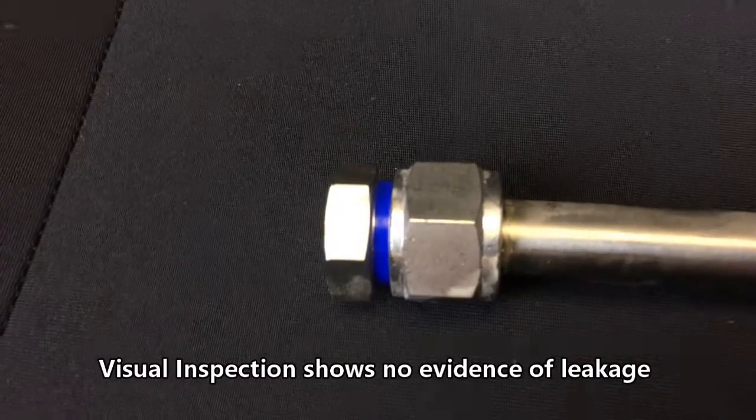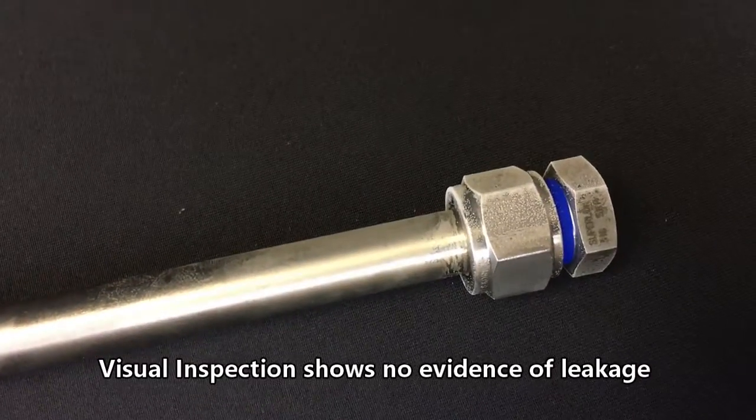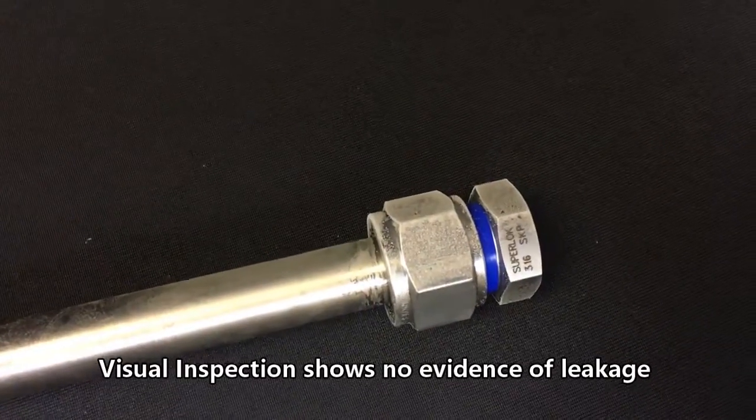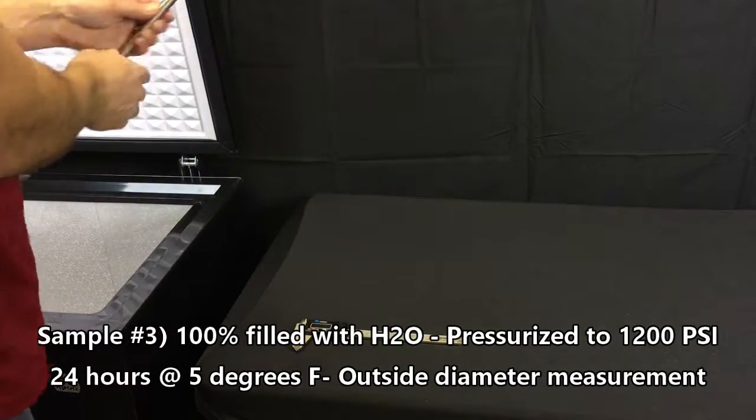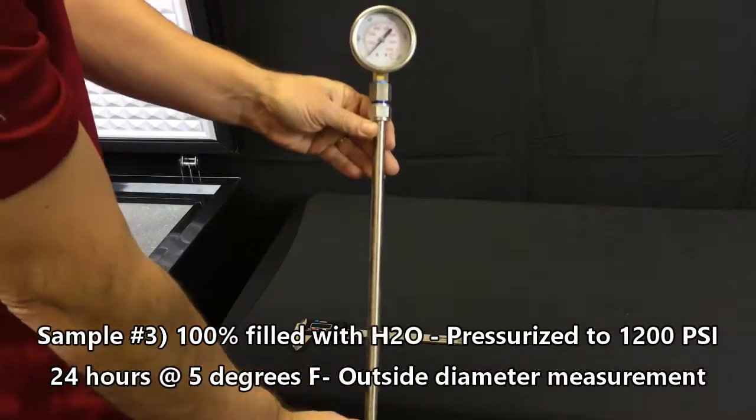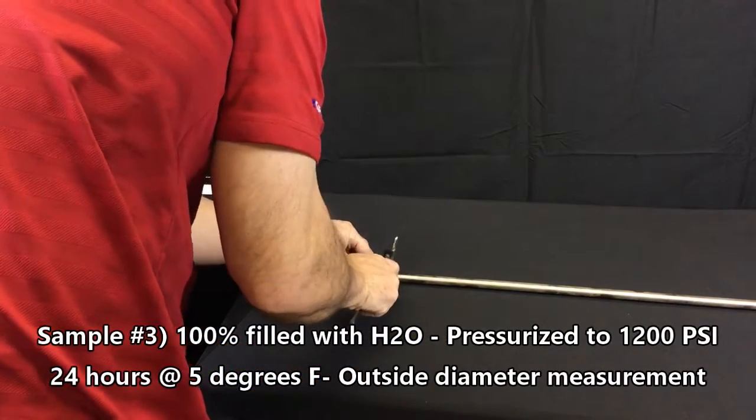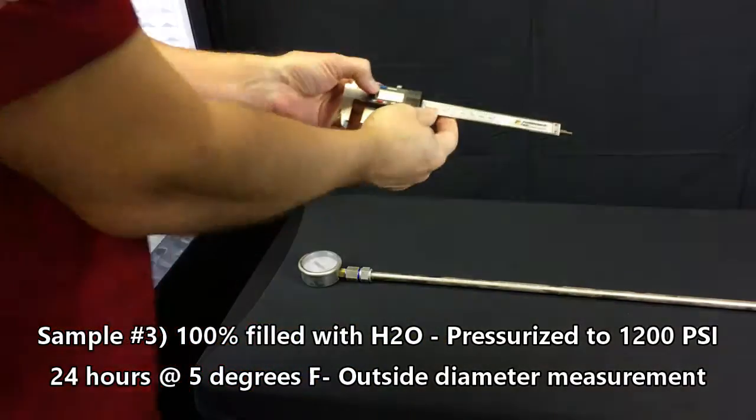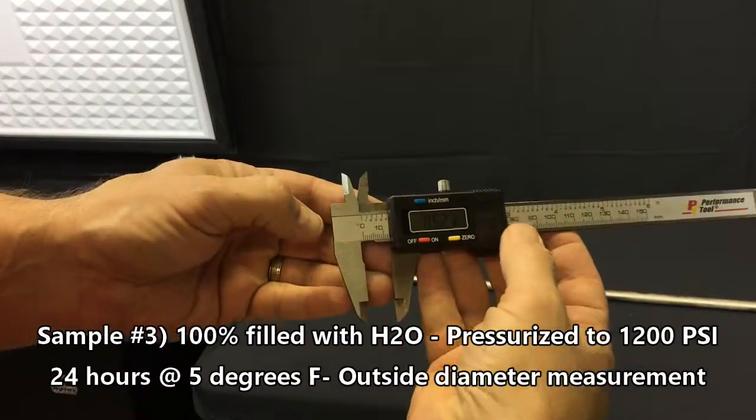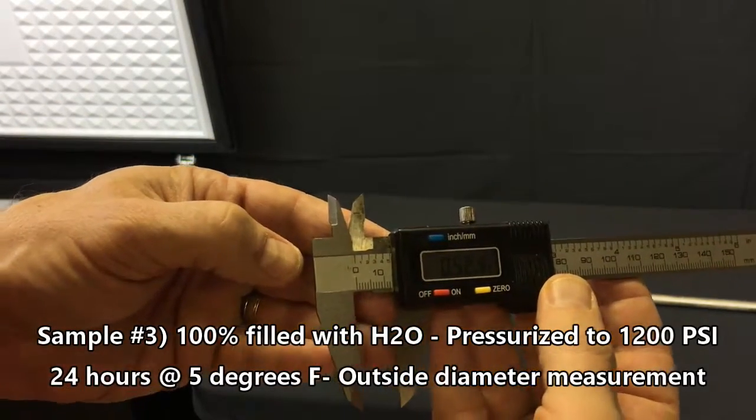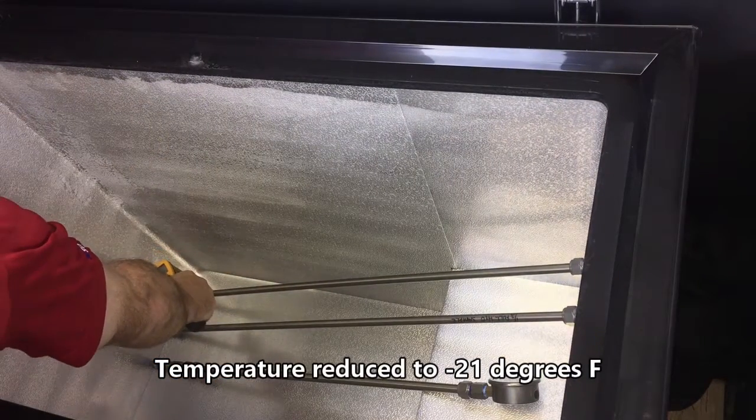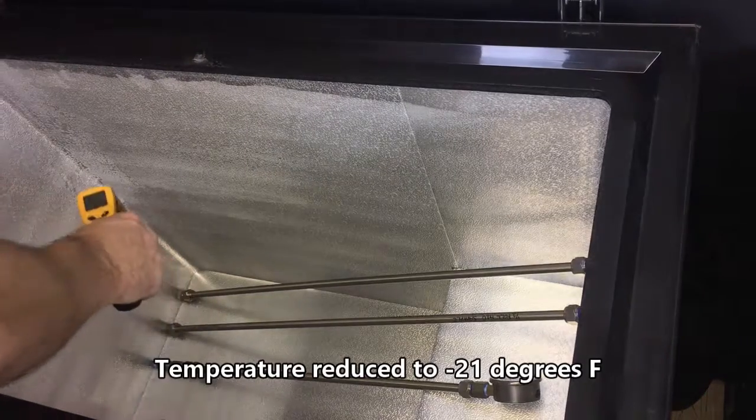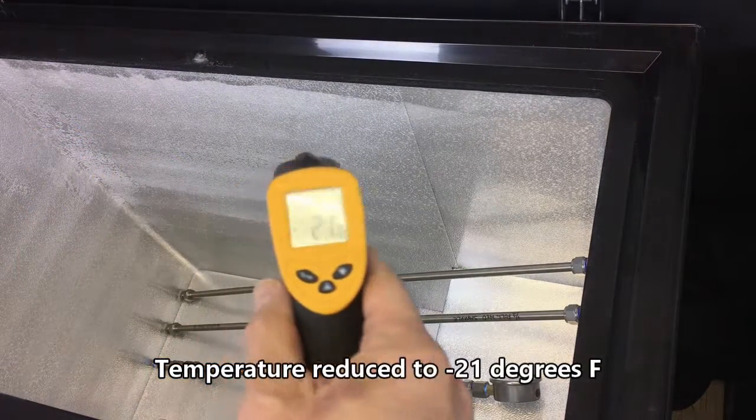The samples are inspected for evidence of leakage. The test samples go back in the freezer at a temperature of negative 21 degrees Fahrenheit.